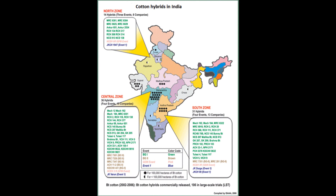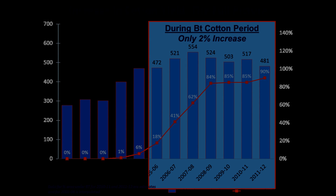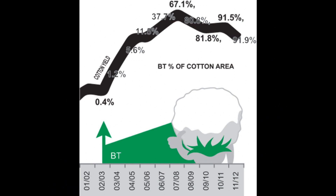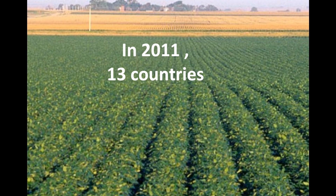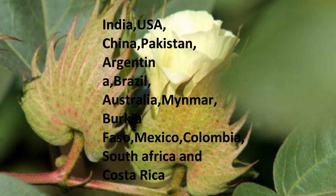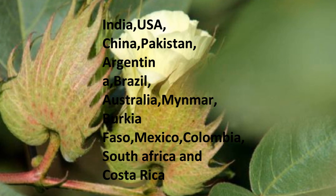In 2011, Bt cotton planting adoption rate increased by 82% from 2009. In 2011, Bt hybrid cotton was dominant in India, the largest cotton growing country in the world. Bt cotton increased by an impressive 13% gain between 2010 and 2011, reaching 86%. A total of 13 countries were growing Bt cotton in 2011.